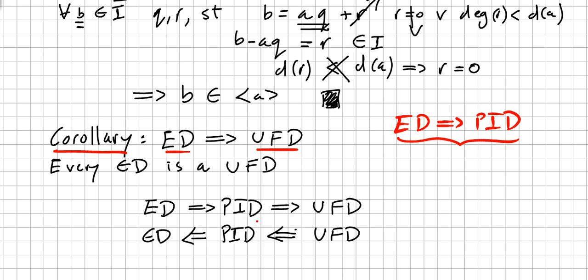A principal ideal domain is a unique factorization domain. If you don't remember the order, remember the alphabetic order: E, P, and U. Euclidean domain implies principal ideal domain, and that implies unique factorization domain. A unique factorization domain does not imply principal ideal domain, and a principal ideal domain does not imply Euclidean domain.